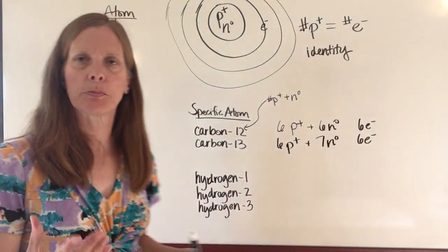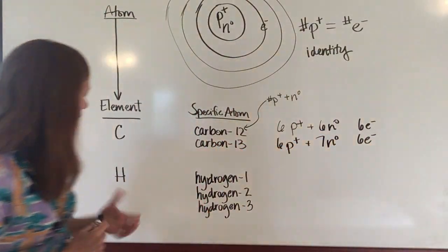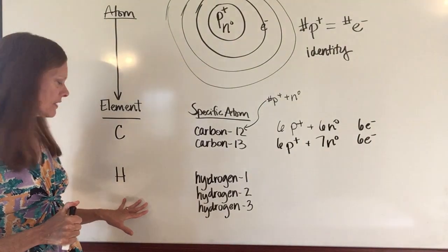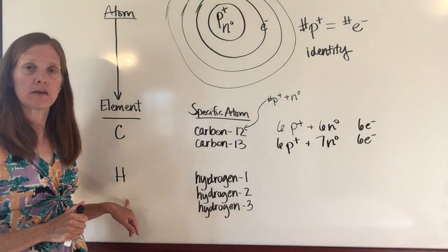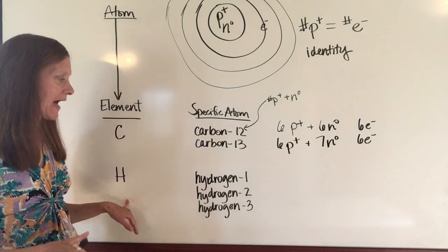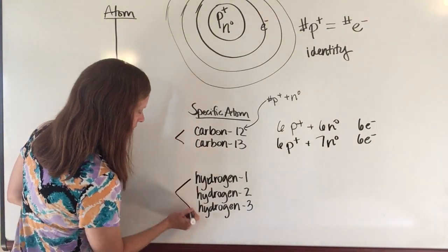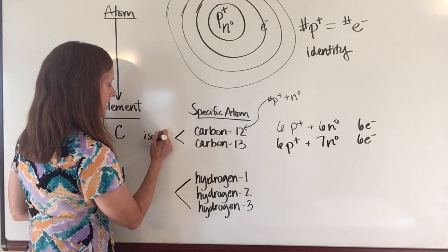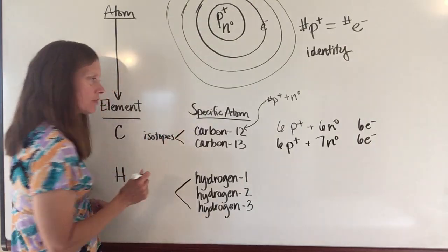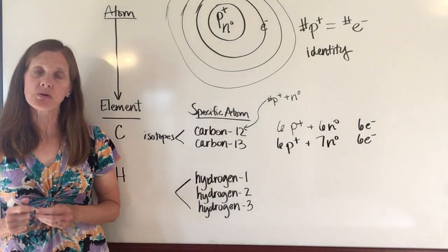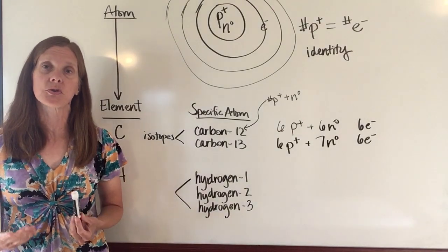Let's do another example to make sure that you understood that. Hydrogen is an element that can be made up of a lot of different types of hydrogen atoms, and in your book you'll notice that these different types are called isotopes of one another. Those are atoms that have the same number of protons but they will have differing numbers of neutrons.